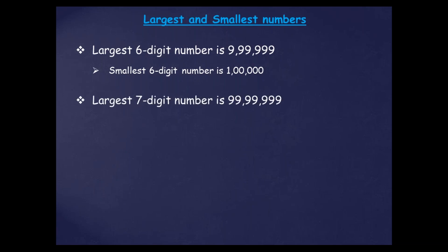Next is the largest seven-digit number, that is 99,99,999. In this number, again if you count all the digits you will find there are seven digits, so this is the largest seven-digit number. The smallest seven-digit number is 10 lakh. In this again there are seven digits — with 1, six zeros are given.